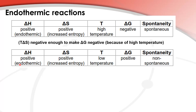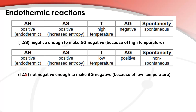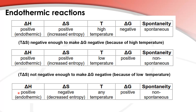For the next set of conditions we have positive ΔH — endothermic — with an increase in entropy and a low temperature. That makes ΔG positive and non-spontaneous, because T times ΔS is not negative enough to make ΔG negative due to the low temperature. For the last set of conditions we have a positive ΔH — endothermic — with a negative entropy, so decreased entropy. At any temperature ΔG is going to be positive and it's a non-spontaneous process.